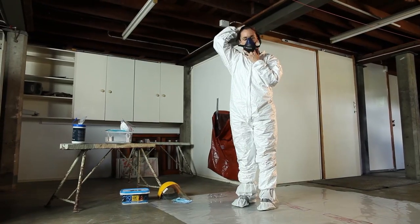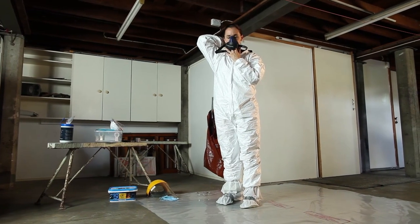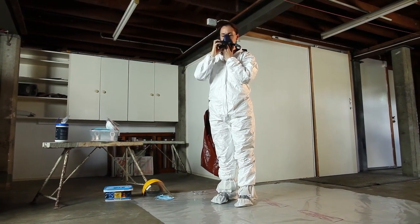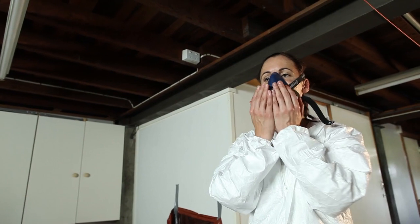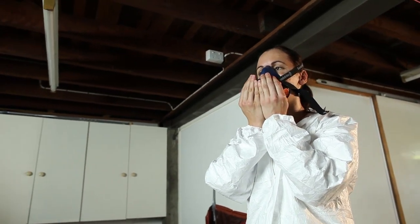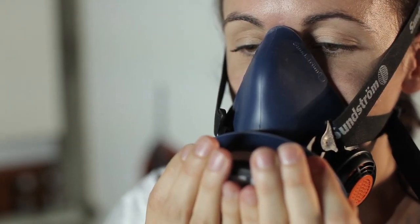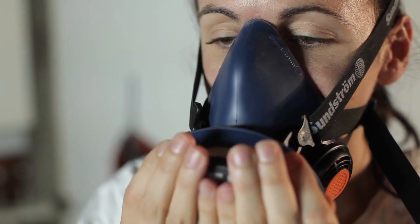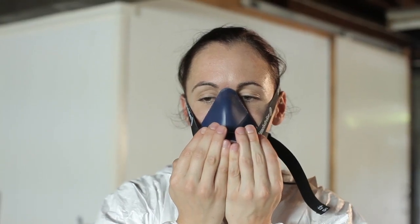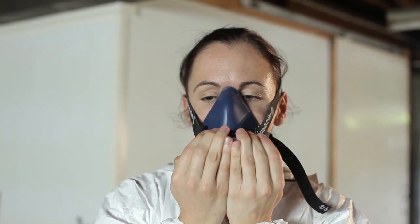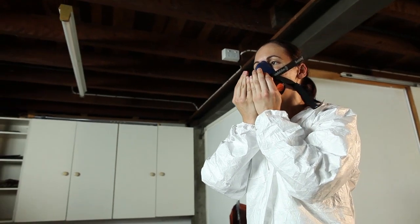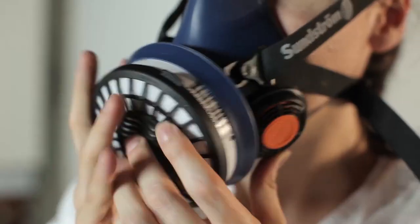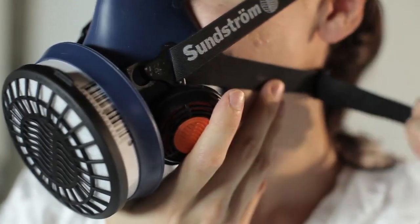If you're using a reusable respirator that does have a valve or cartridge, or a disposable respirator that has a valve, place a hand over each cartridge or on the valve and take a quick deep breath in. If it is well sealed, the respirator will collapse slightly inwards and you won't feel any air passing between it and your face. Any detected air leaks should be corrected by repositioning the respirator and checking again.